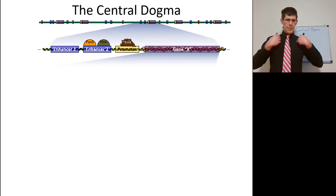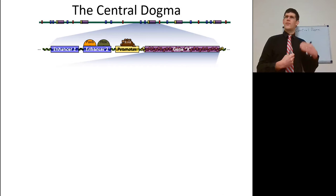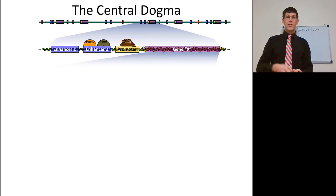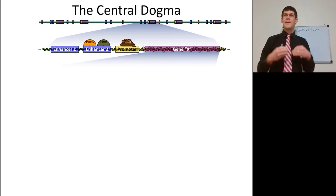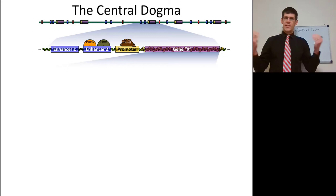Hair might start developing at puberty and start falling out when you get older, so enhancers are age-specific as well. We have enhancers telling when and where, a promoter that helps the gene get expressed by allowing RNA polymerase to attach, and the gene itself.